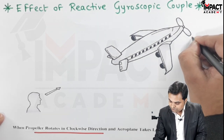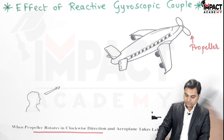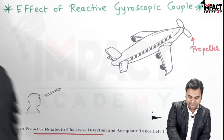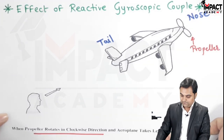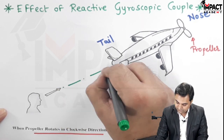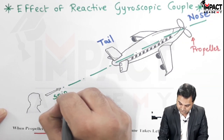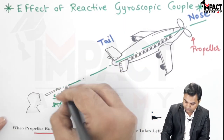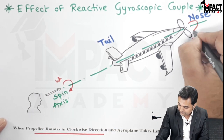This is the propeller and it is rotating in a clockwise direction. The observer is behind the plane, that is towards the tail end, and this is the nose of the plane — we have to look from rear. Here is the axis of the propeller, and this axis is called as the spin axis, about which it is rotating in clockwise direction.